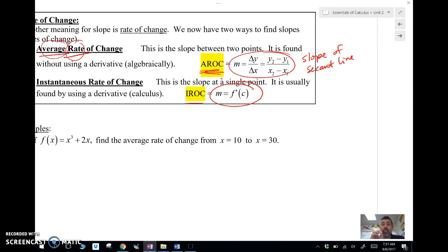It's how is the rate changing at an instant, at a certain point in time or a certain spot, whereas the average rate of change is over two points.